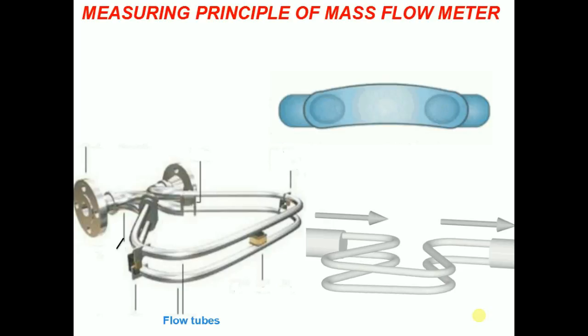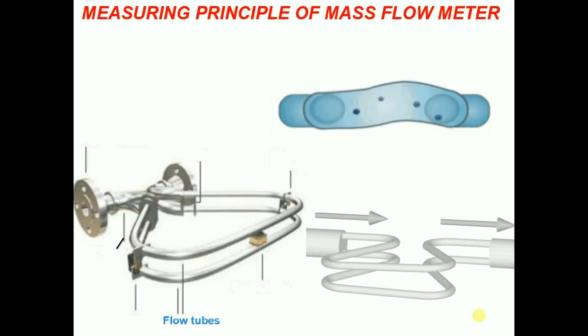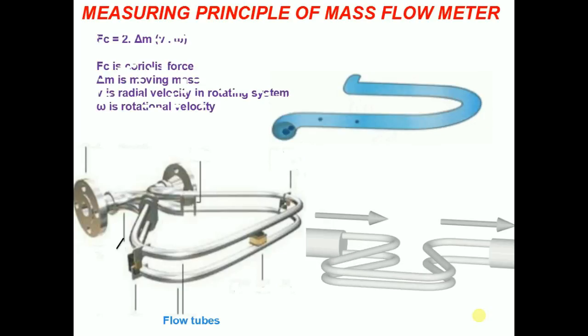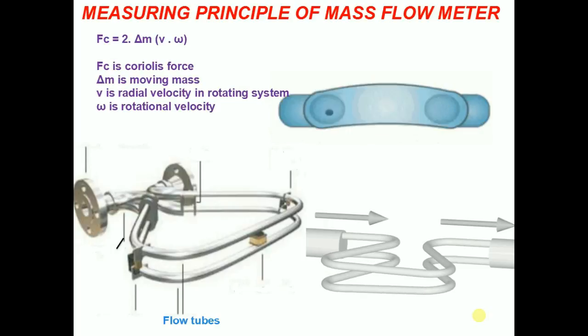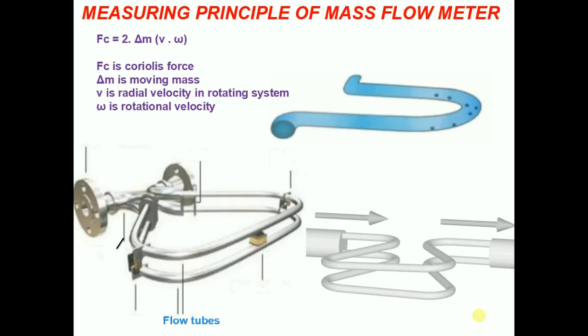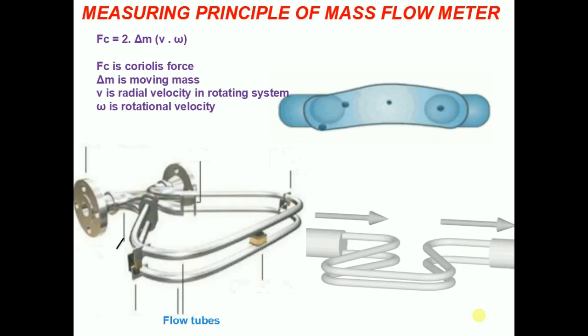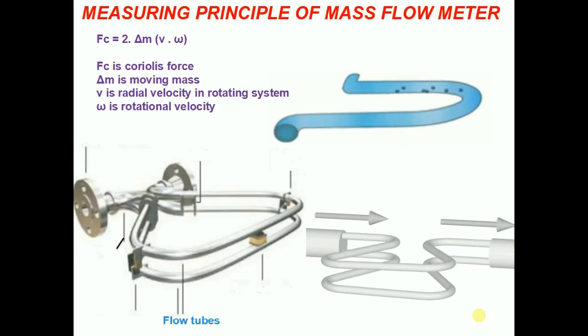The Coriolis force, Fc, equals 2 times Δm (moving mass) times v (radial velocity in rotating system) times ω (rotational velocity).